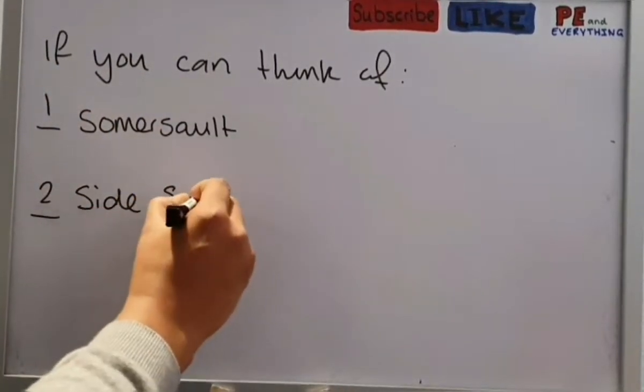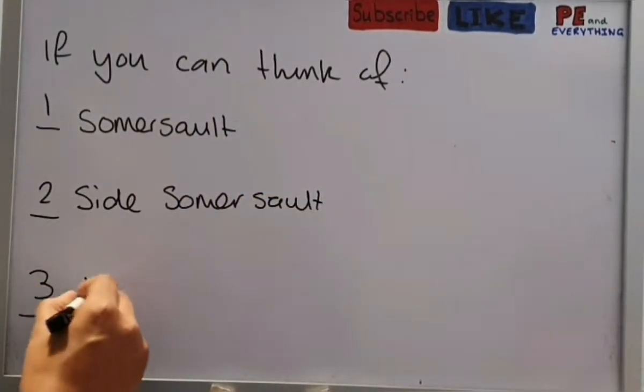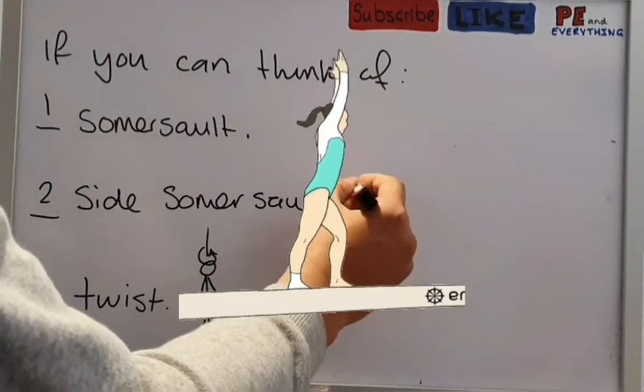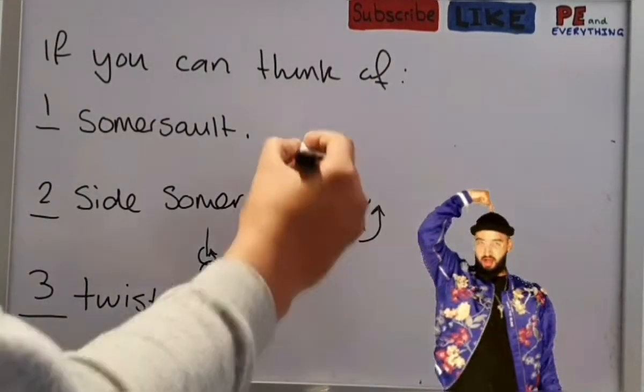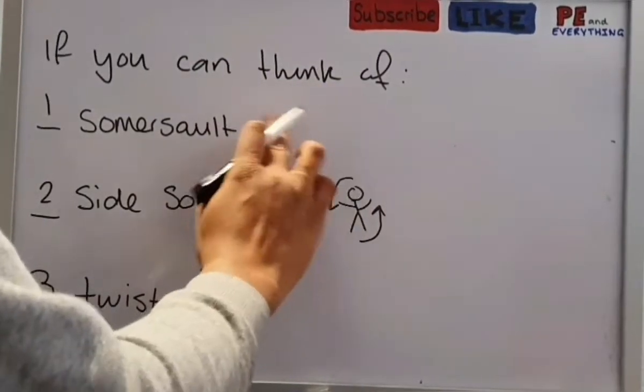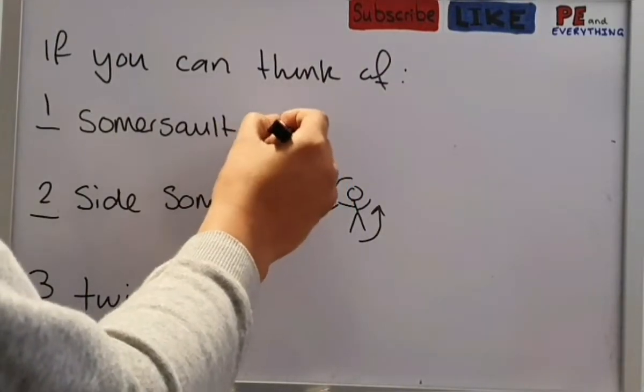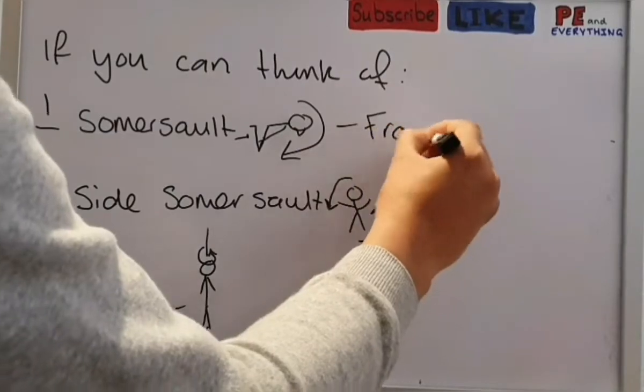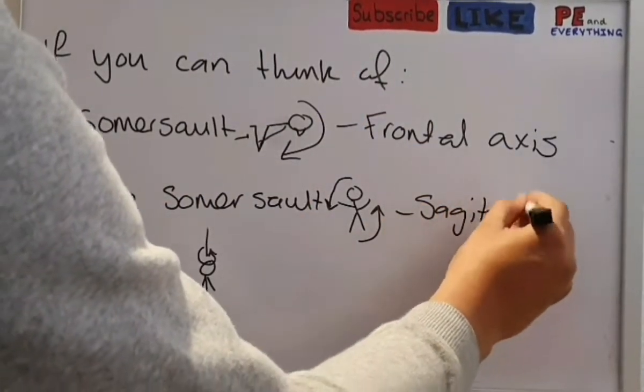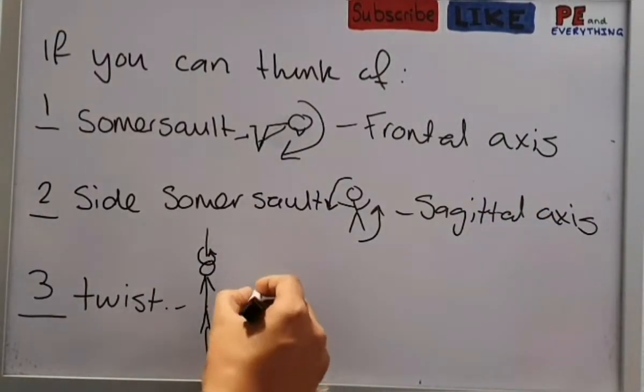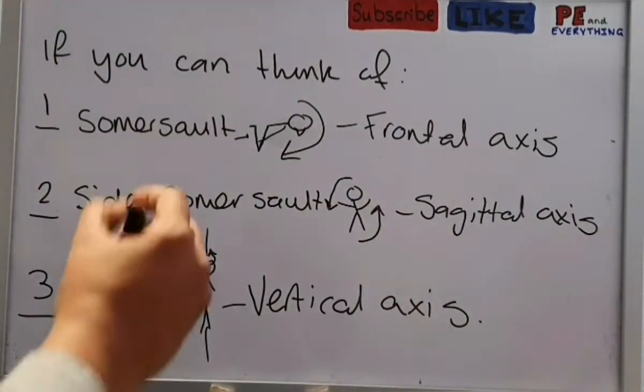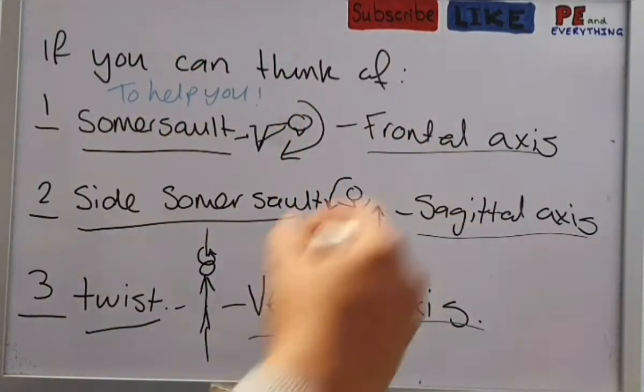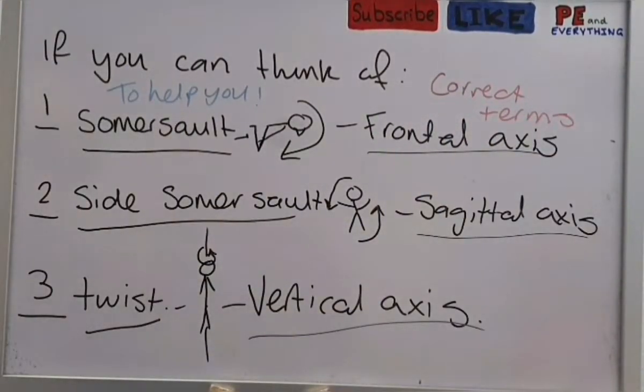So if you can think of it like this—this is how I was taught. One axis is somersault, a forward somersault. The next one is like a sideward somersault. And then the final one is like a twist. I've tried to draw stick man visuals for you here for better understanding. As you can see, the somersault would be a forward one. The side one would be a side somersault, like a cartwheel. And then the twist one would be a direct twist. So the forward somersault is called the frontal axis. The sideward somersault is the sagittal axis. And the twist is called the vertical axis. These are things that I link to it, and these are the correct terminology.